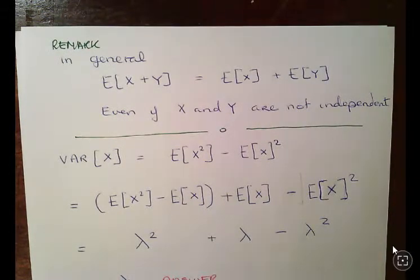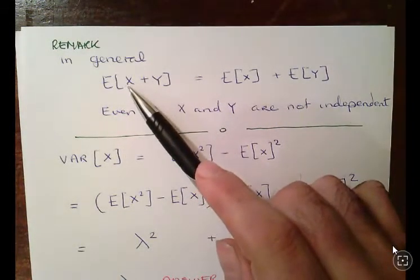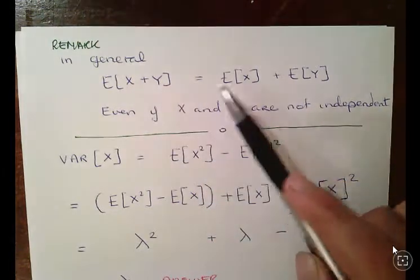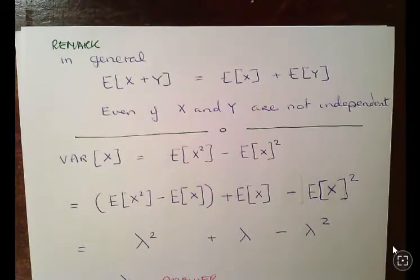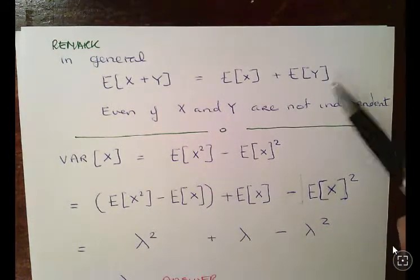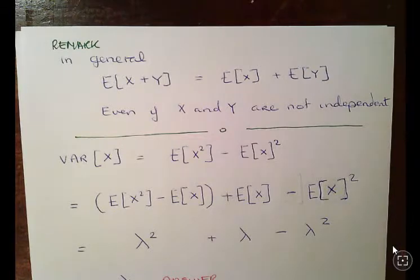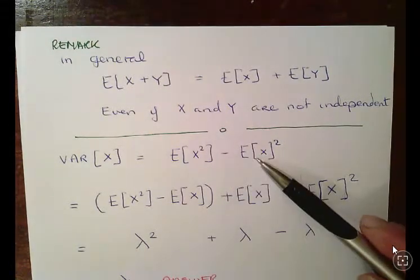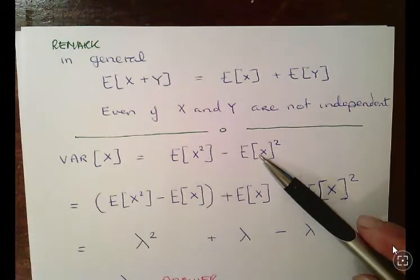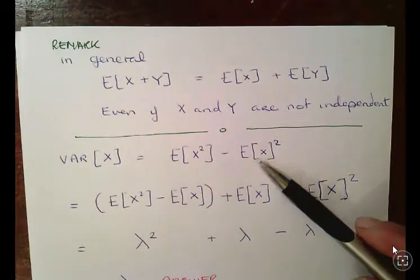Just in general, the expected value of X plus Y is equal to the expected value of X plus the expected value of Y, even if X and Y are not independent. Even if Y is like X squared or something like that. The variance of X is equal to the expected value of X squared minus the expected value of X squared—that very famous definition.